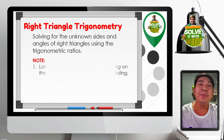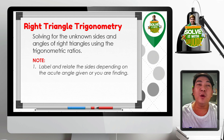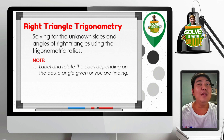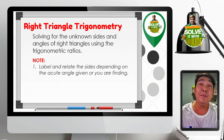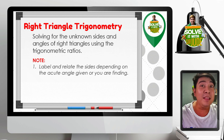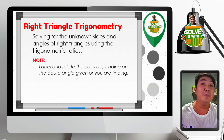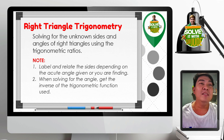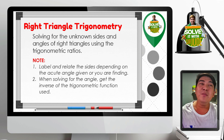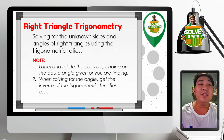We need to take note of the following. First, when we are solving, we need to label and relate the sides depending on the acute angle given, or the one you are finding, with respect to the right triangle. Second, when we are solving for the angle, get the inverse of the trigonometric function being used.